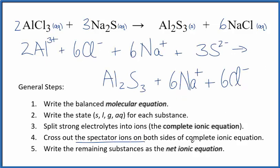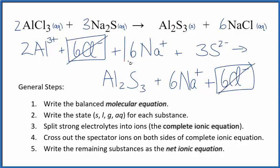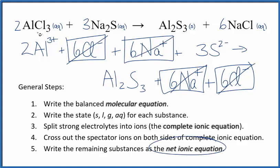Now we can cross out spectator ions. They're the same on both sides. In the reactants, I have six chloride ions. Also here in the products, spectator ions, cross them out. Six sodium ions, again in the products, spectator ions. What's left, that's the net ionic equation for AlCl3 plus Na2S.